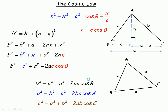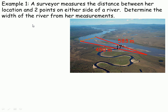The first example says a surveyor measures the distance between her location and two points near the side of a river. The surveyor knows one distance is 583 meters, the other along the river bank is 450 meters, and the angle between them is 17 degrees. We want to determine the width of the river. This is a classic cosine law question — we know two sides and the angle between them, so we can find the third side.